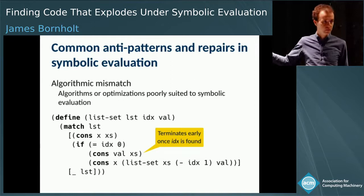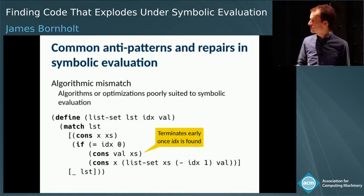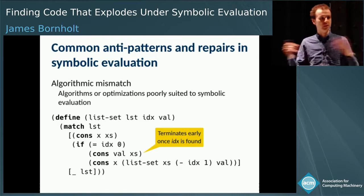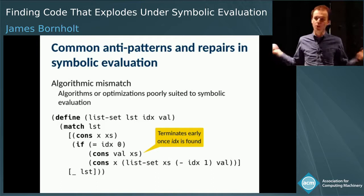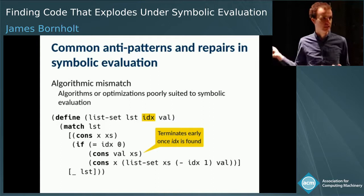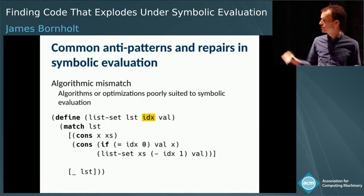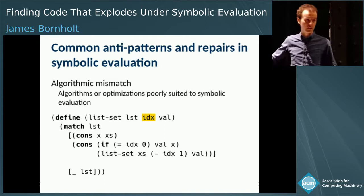Here's a classic functional algorithm: a linked list update. It takes a linked list, an index, and a value, and creates a new linked list with that value at that index. It recurses down the list until it finds the element to fix — if the index is zero, it updates the value and stops recursing, since it found what it was looking for. This seems totally reasonable, and it's a fine optimization in concrete settings. But imagine you don't know the value of index — maybe you're trying to prove something about list-set.